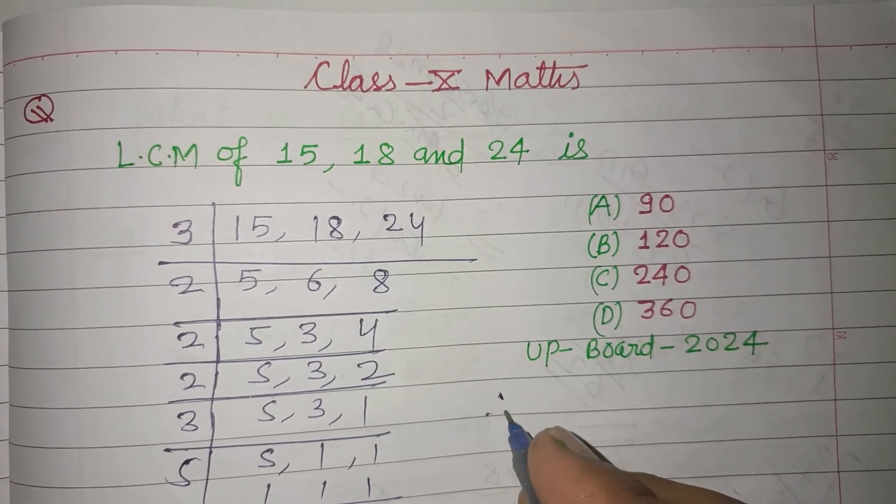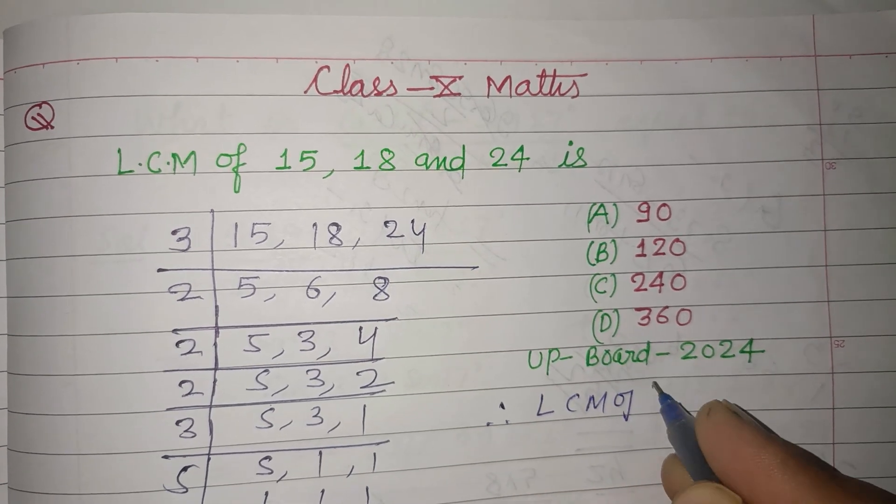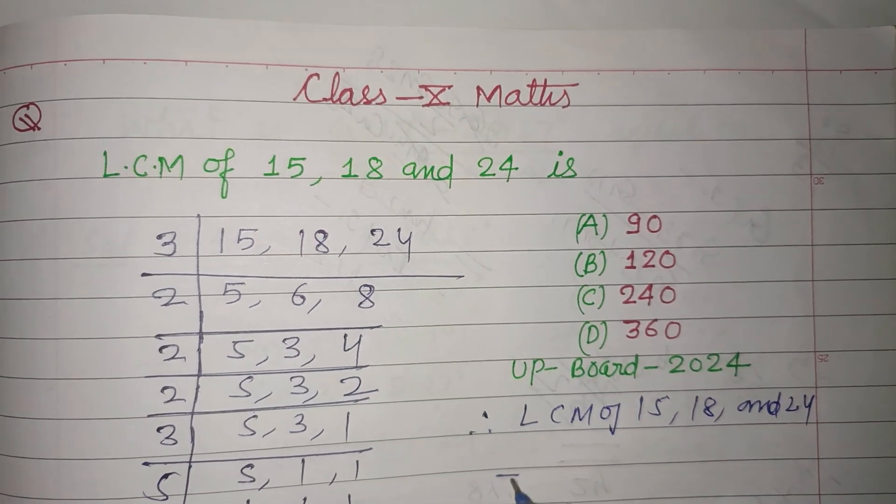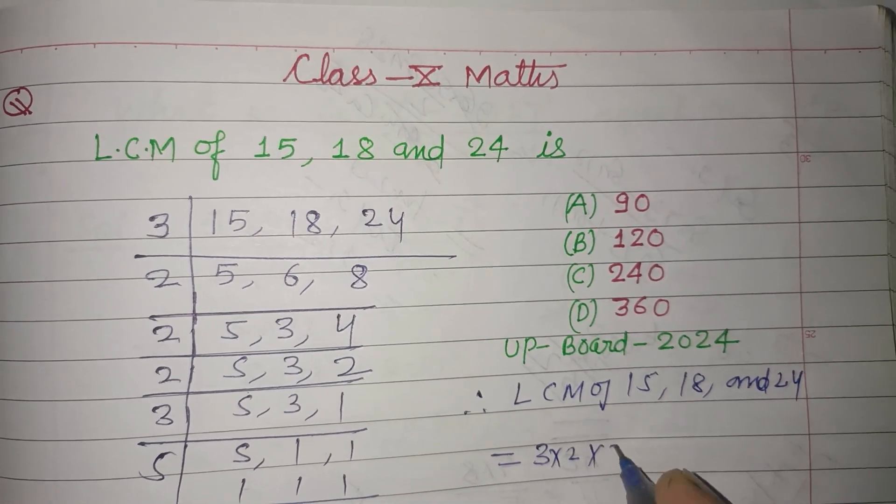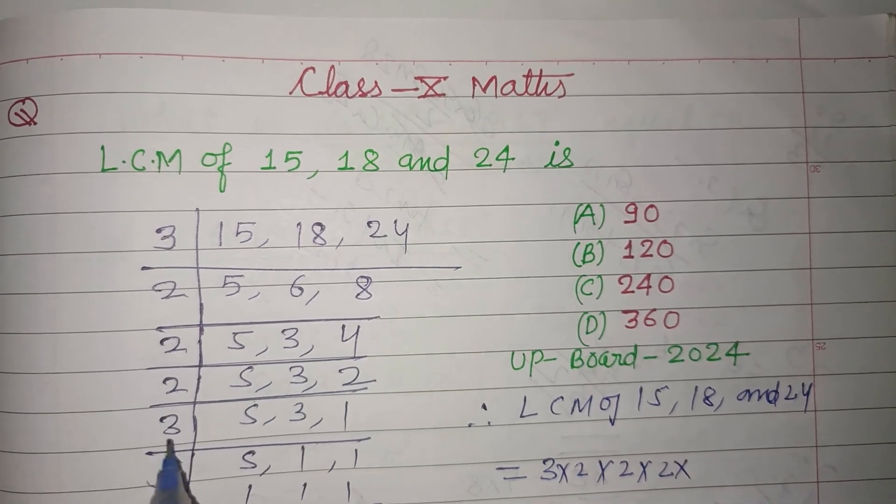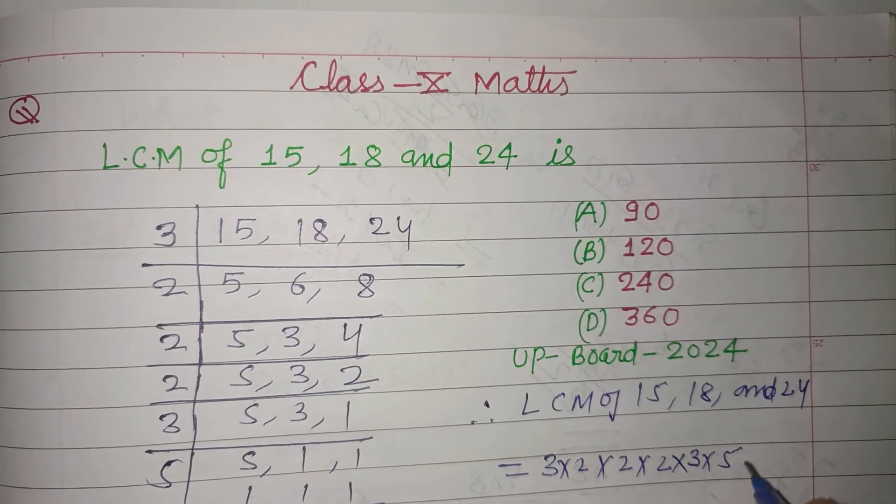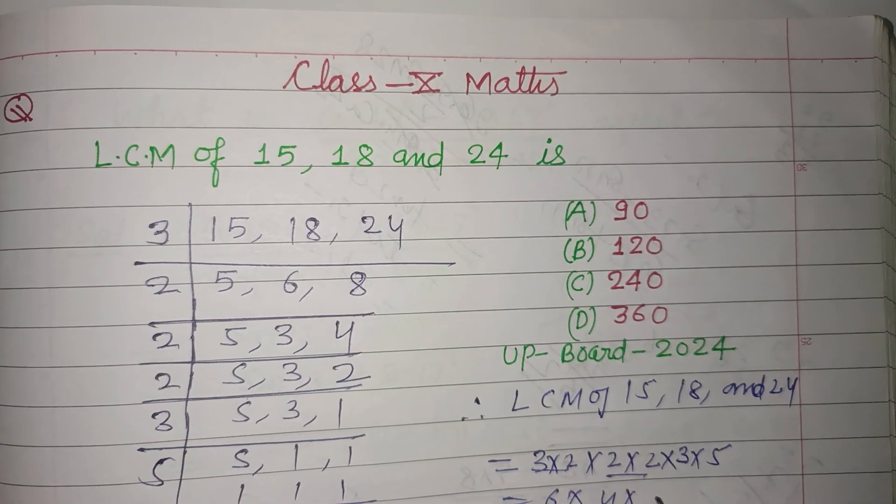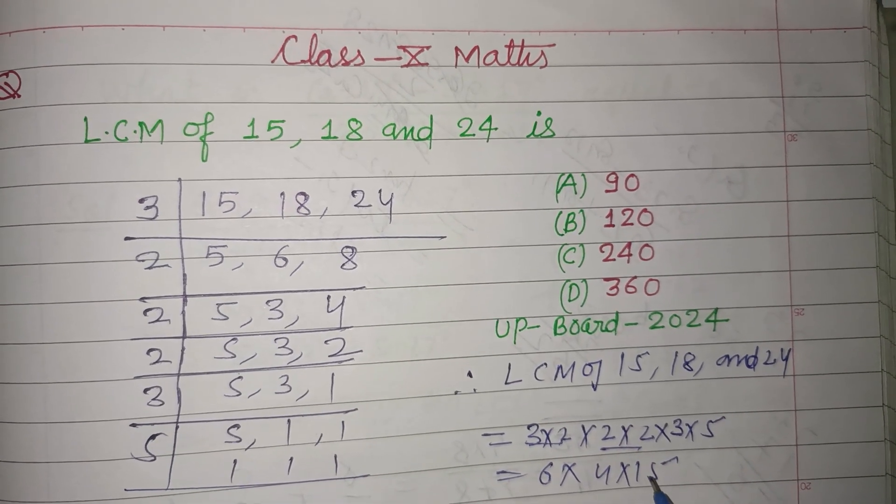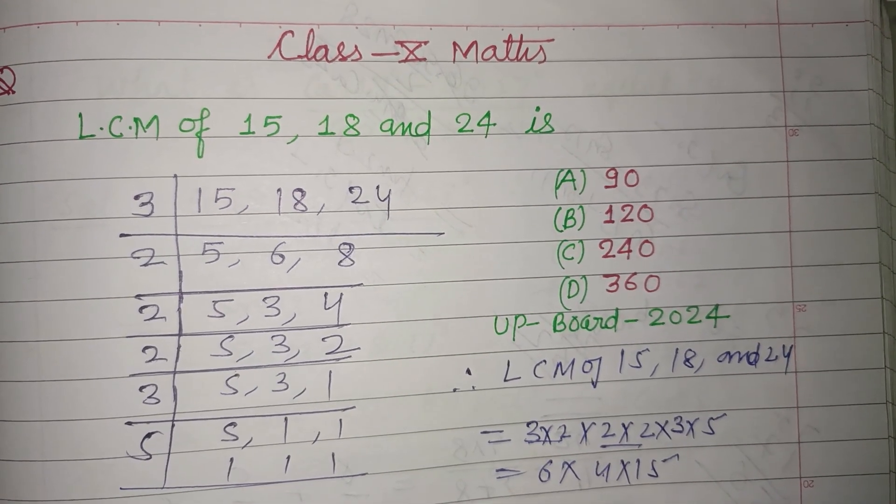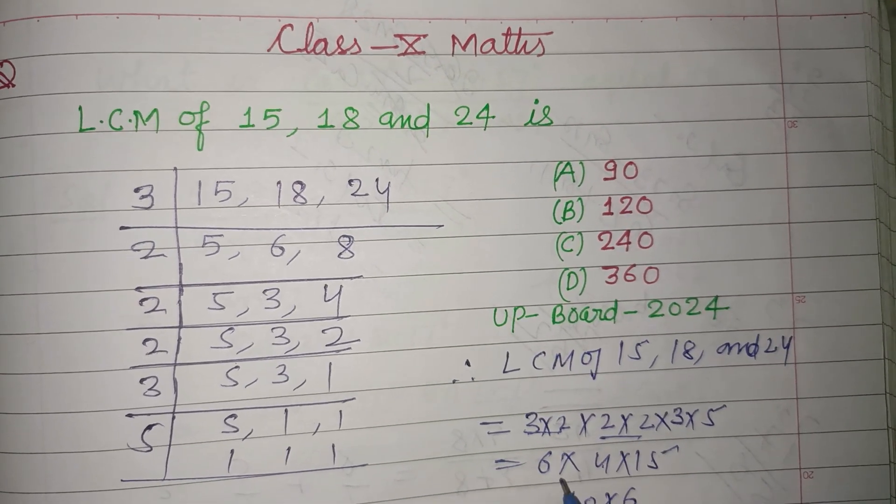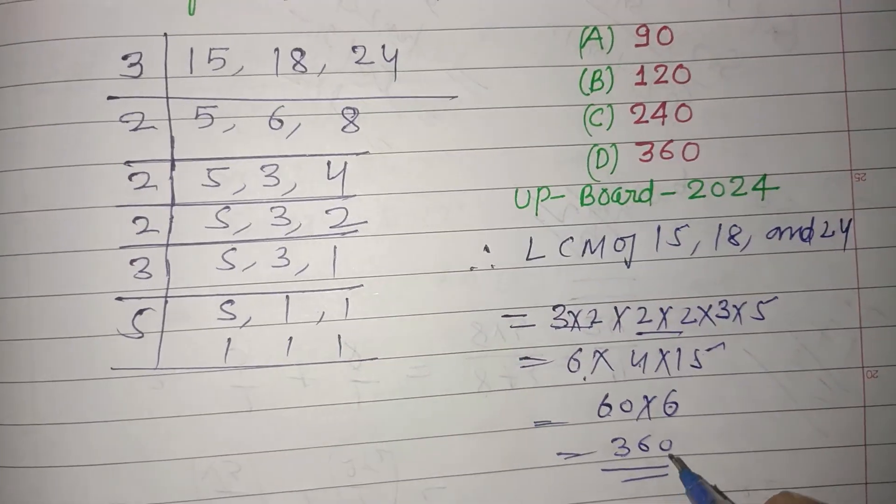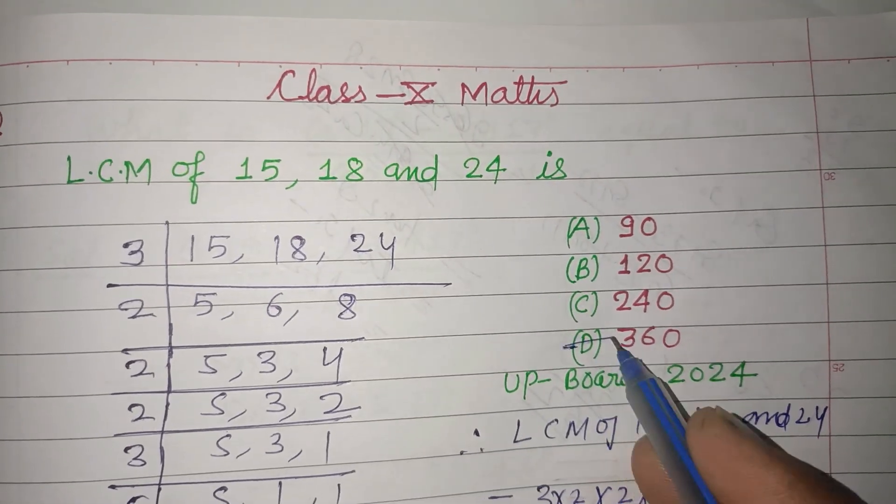Therefore, LCM of 15, 18 and 24 is 3 into 2 into 2 into 3 into 5. So this is 3 into 2 is 6, into 2 is 12, into 3 is 36, into 5 is... 6 into 4 is 24, into 15 is... 60 into 6 is 360. So 360 is the correct answer of this question which is found in option D.